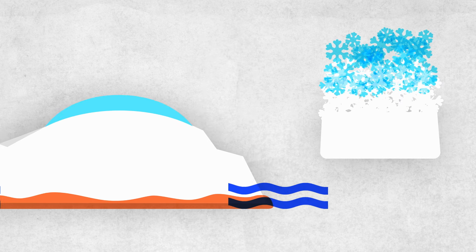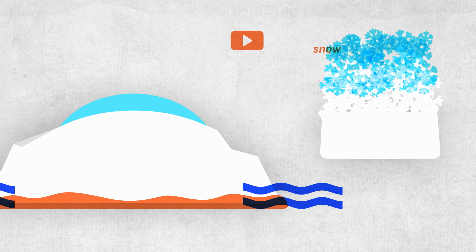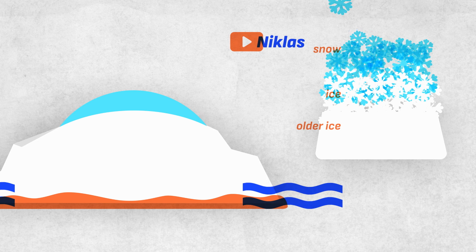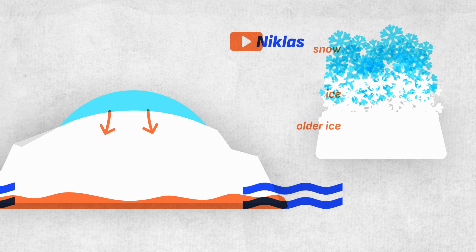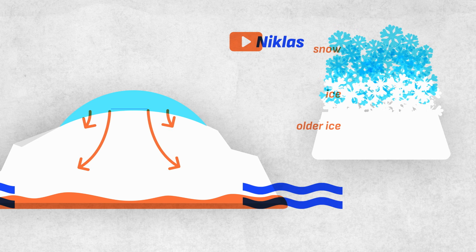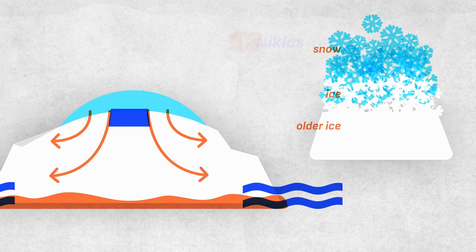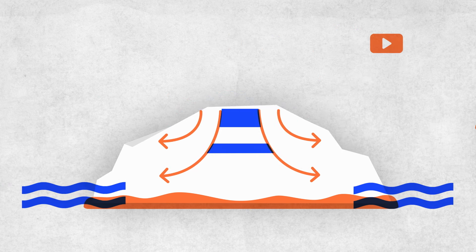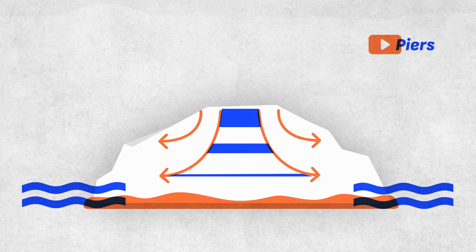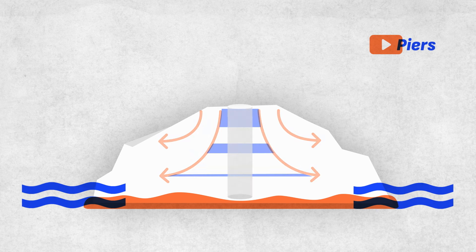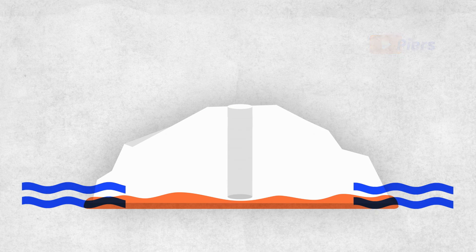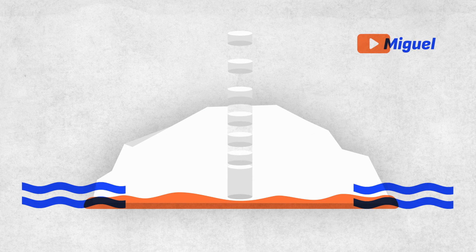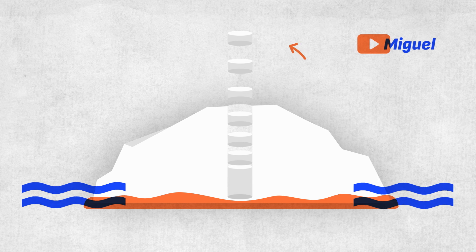Every year snow falls onto the Antarctic ice sheet forming an annual layer. These layers are compressed over time by the weight of new snow above. This pushes older ice deeper and deeper. By extracting an ice column we effectively get a cross section of the layers. This column is called an ice core.